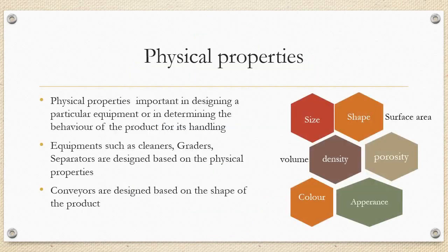The first property is the physical property. Physical properties are important in designing a particular equipment or in determining the behavior of the product for its handling. Equipments such as cleaners, graders, separators are designed based on the physical properties. Conveyors are also designed based on the shape of the product. The physical properties include the size, shape, surface area, volume, density, porosity, color and appearance.